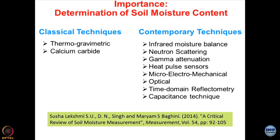I have guided two PhD theses — one by Dr. Binak and one by Dr. Susha Lakshmi — where we used these techniques and compared them. Sometimes optical techniques are utilized to find out moisture content. When talking about electrical properties of geomaterials, TDR — time domain reflectometry — probes and capacitance probes are utilized for finding out moisture content. You must be wondering that normally we do not take soil moisture content determination so seriously, but in today's world, most of the emphasis is on determining soil moisture content precisely and linking it with different properties of geomaterials.